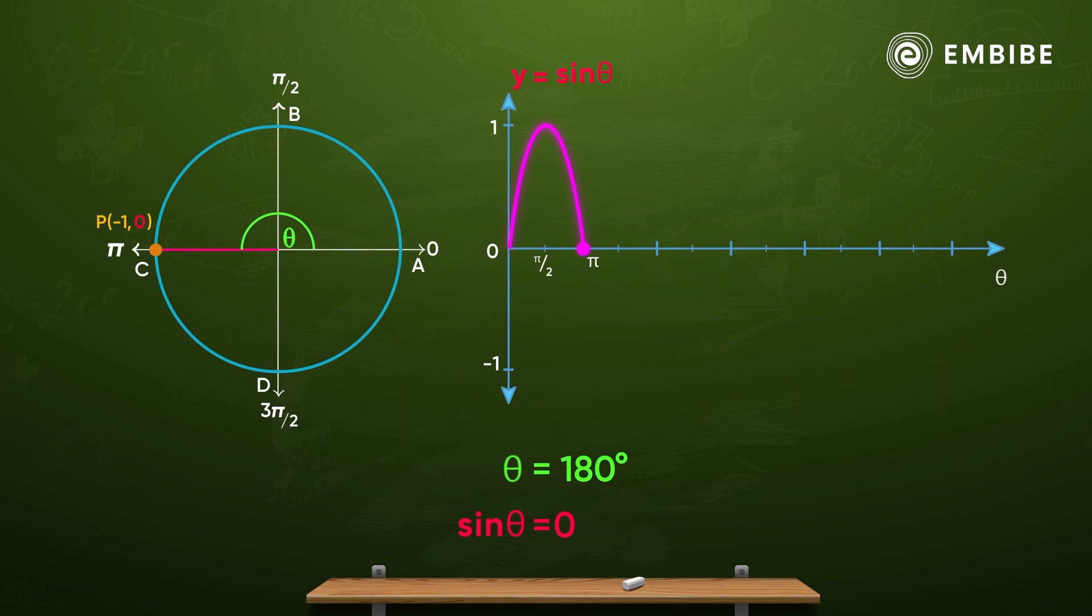So, let's go, now let's increase the theta and finish this circle. From pi to 3 pi by 2, y will go negative. And from 3 pi by 2, this will become minus 1. This position is point D.